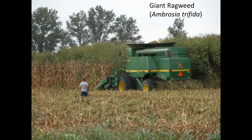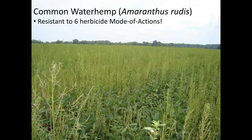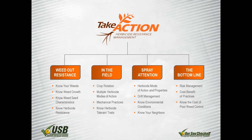Here's an example of giant ragweed in corn. Not only does it show its competitive ability, which we talked about in another training segment, but it shows the kind of scenario we don't want to get into. Or situations like common waterhemp that is now resistant to six herbicide modes of action. So we want to understand this — why does this happen and how can we avoid it? Diversity and rotation of herbicide modes of action is very important to that.